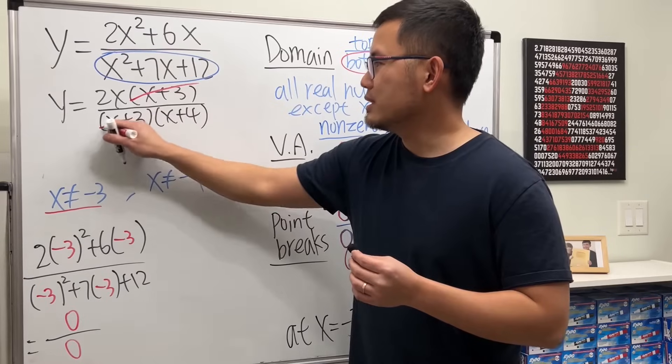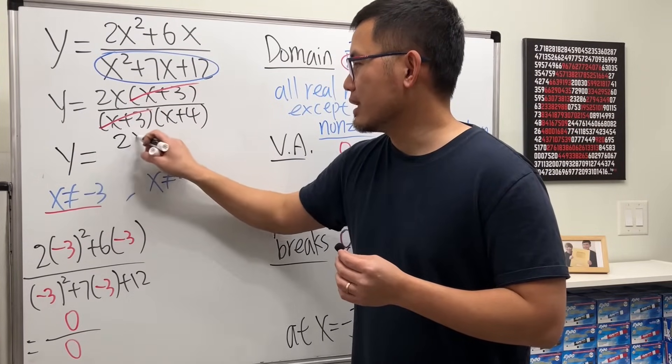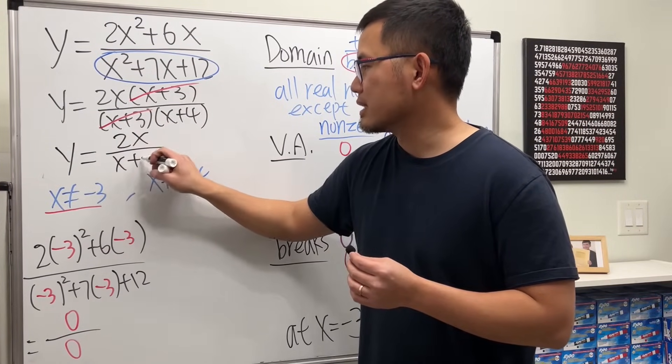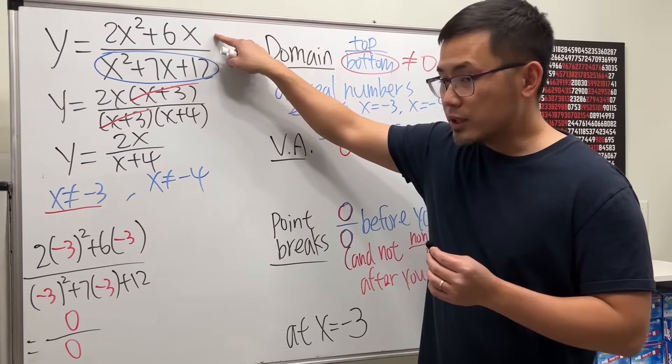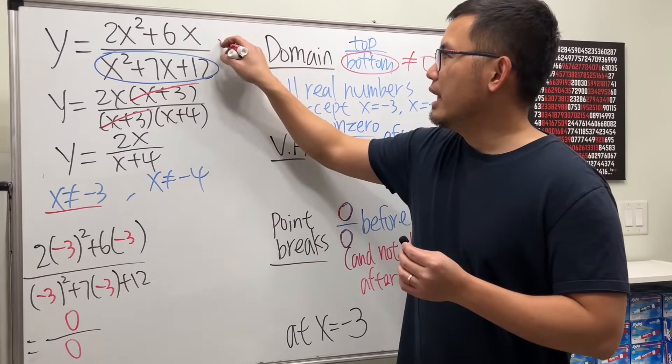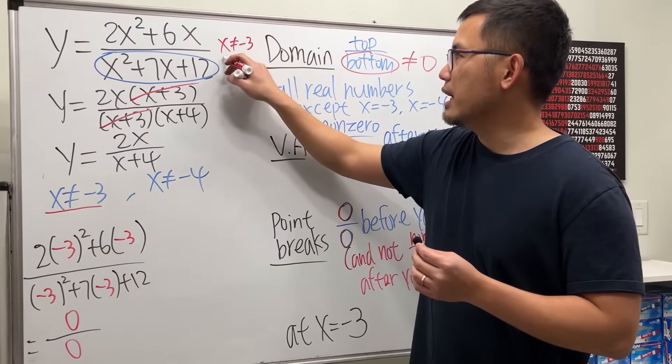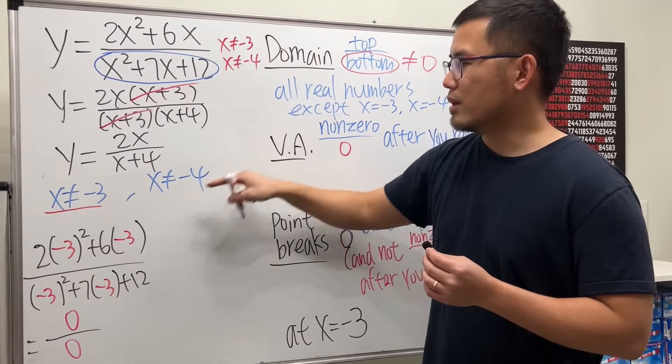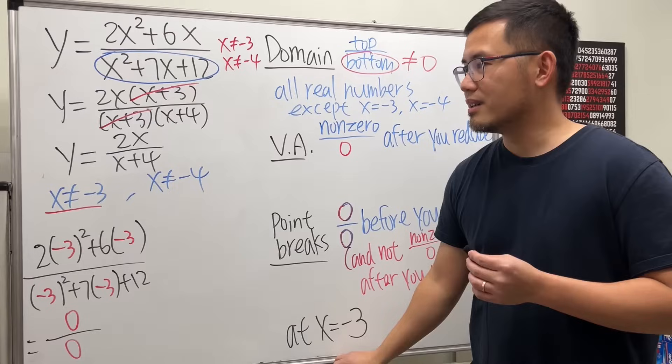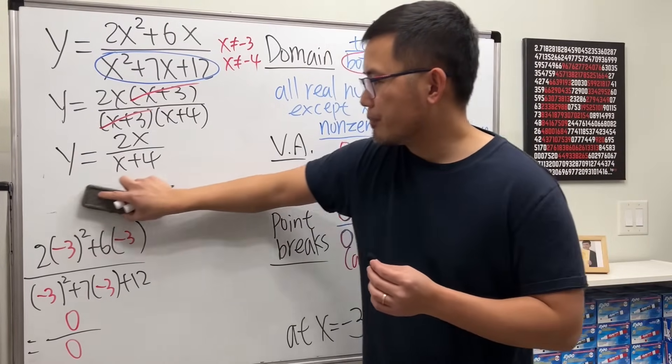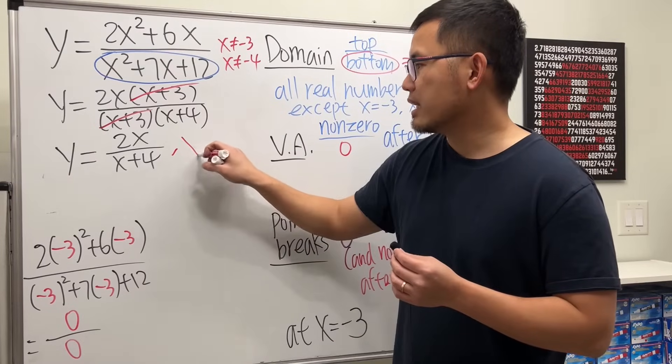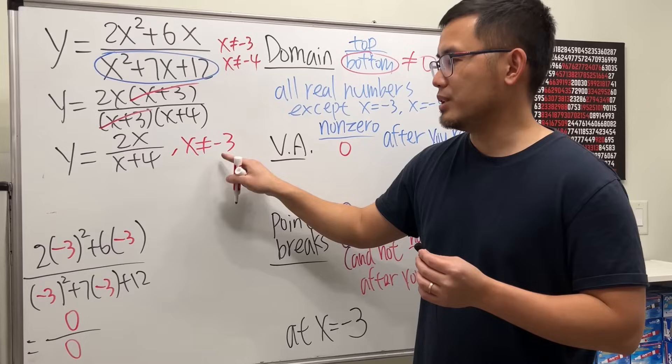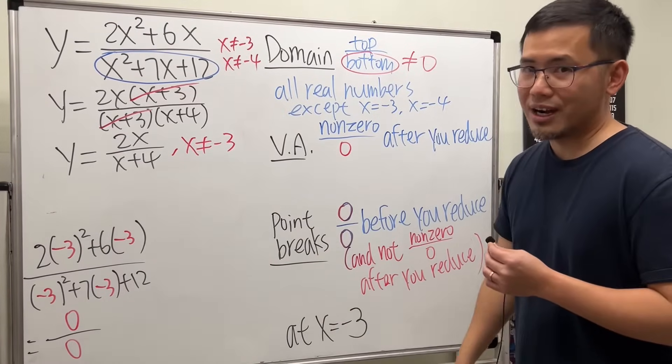In fact, after you reduce, you can see that y is equal to 2x over x plus 4. But remember, this function originally, you had to make sure x cannot be negative 3 and x cannot be negative 4 because we did that over there. So for this function, you will still have to mention that x cannot be equal to negative 3. That is going to be a point break on the graph.